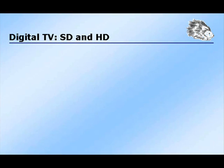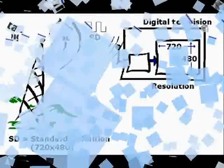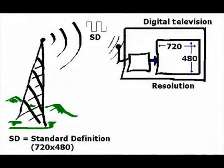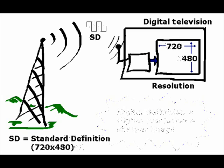In general, there are two types of digital TVs: standard definition and high definition. Standard definition displays the image inside a grid that is 720 points horizontally and 480 points vertically. The points are known as pixels. This is what is called the resolution of the image.